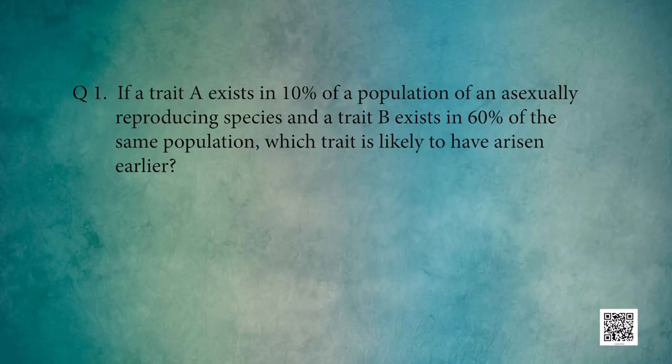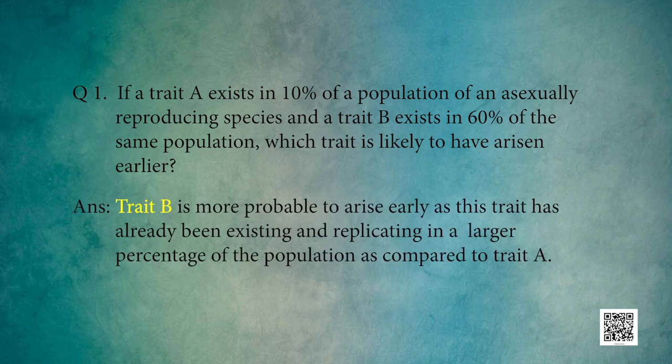The first question was: if a trait A exists in 10% of a population of an asexually reproducing species and a trait B exists in 60% of the same population, which trait is likely to have arisen earlier? The answer is trait B is more probable to have arisen early, as this trait has already been existing and replacing in a larger percentage of the population as compared to trait A.